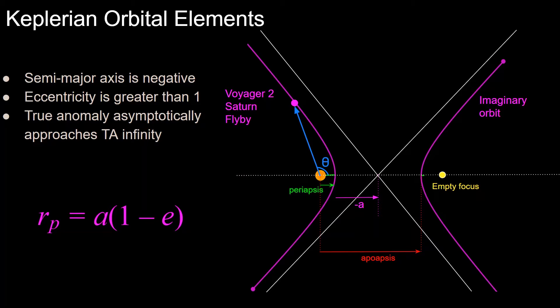The other three describe the size, which is a semi-major axis, the shape, which is the eccentricity, and position, which is the true anomaly.